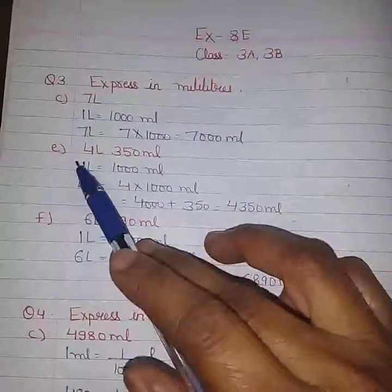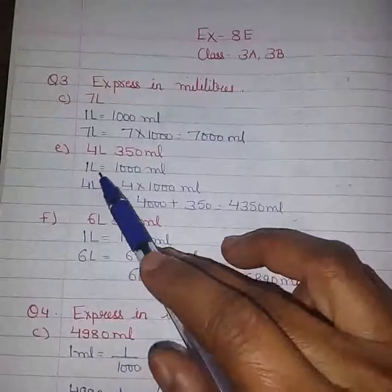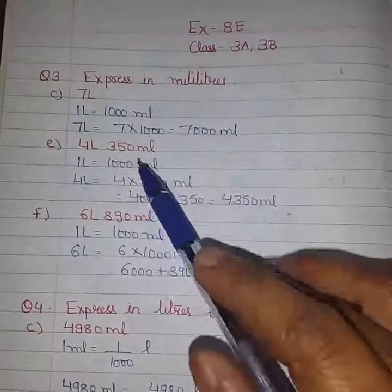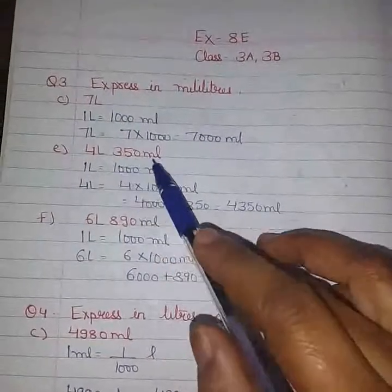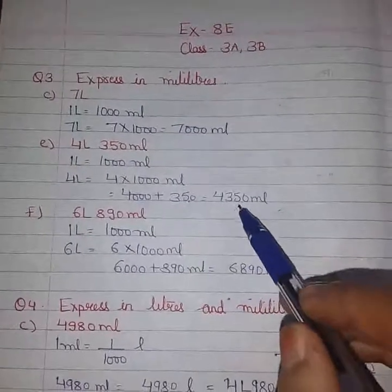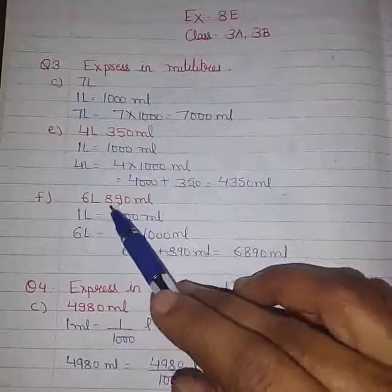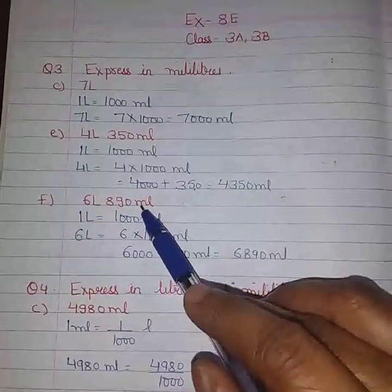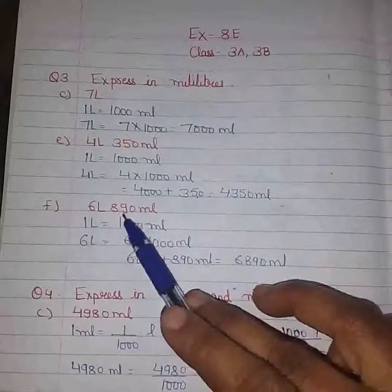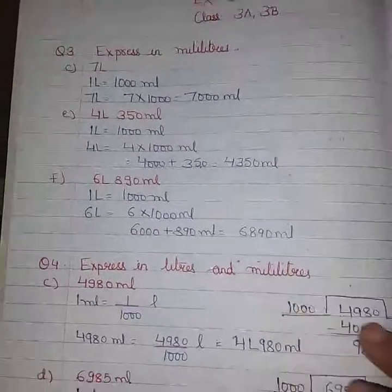Next is question E, 4 liters 350 ml. 1 liter equals 1000 ml, then 4 liters equals 4000 ml, add 350 ml, we will get 4350 ml. Next is 6 liters 890 ml, so 6 liters equals 6000 ml, plus 890 is 6890 ml.